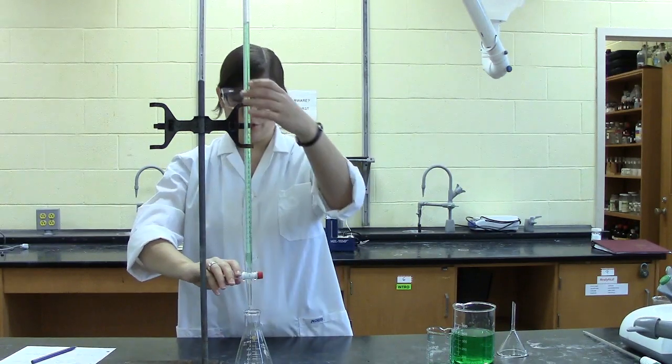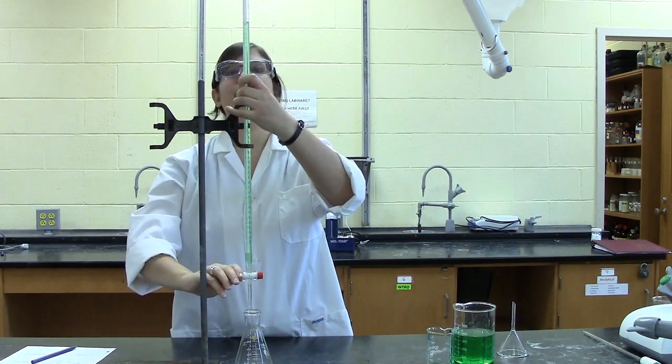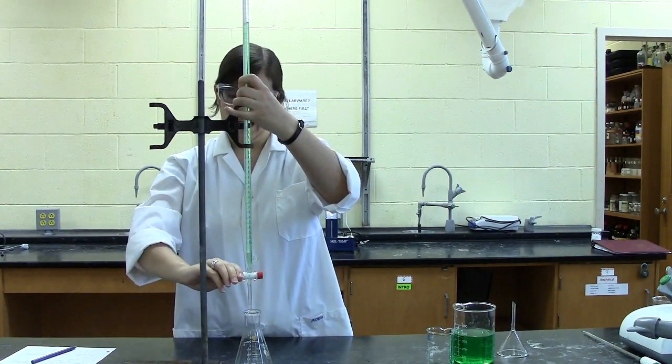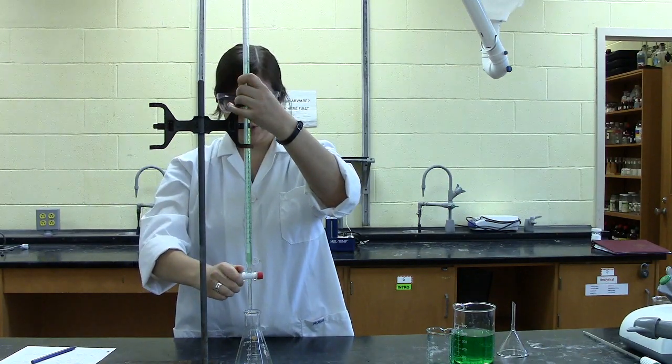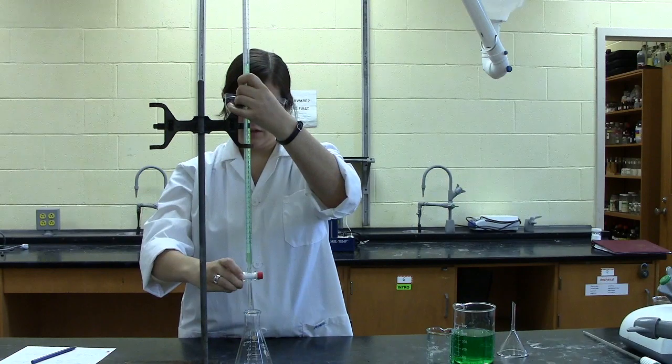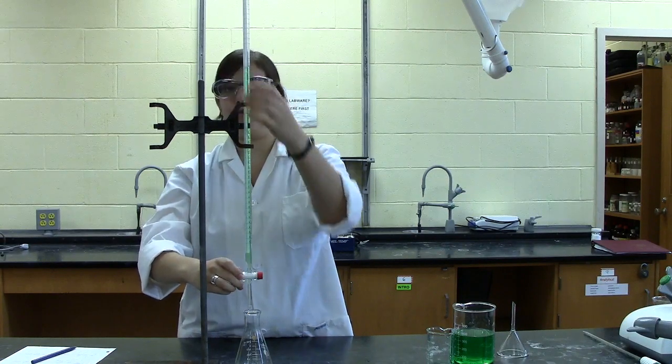As you're dropping your solution into your Erlenmeyer flask, if you know what amount you want to add, you can start by going quickly, and then as you get closer to whichever amount you know you need, you can close the valve most of the way to go drop-wise.